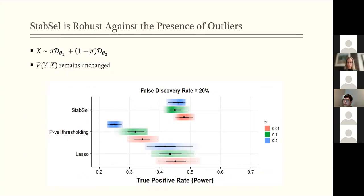And here we show the true positive rate of the three different methods when we vary this pi. And the first thing we know is that the multivariate approach like lasso or stability selection outperforms the univariate approach p-value thresholding.